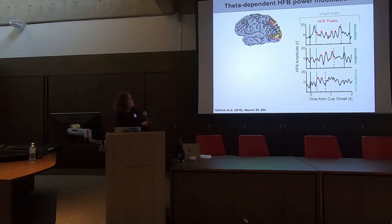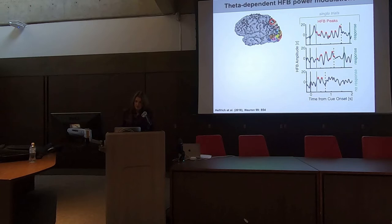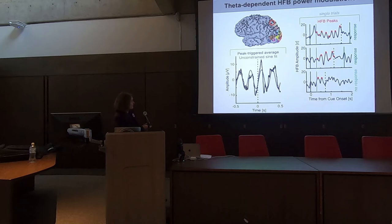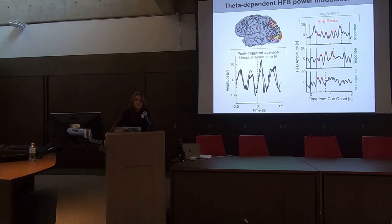To get at that, we did a peak-triggered average analysis. The idea is simple: you take a peak, take a 500-millisecond window before and after, shift to the next peak and do the same, and average across many trials and electrodes. When we do this analysis, we fit the raw potential with a sinusoid — and you can see right away that this is a 4 Hz neuronal rhythm that modulates the high-frequency broadband response.